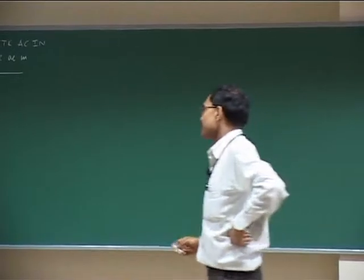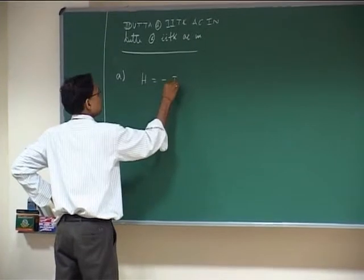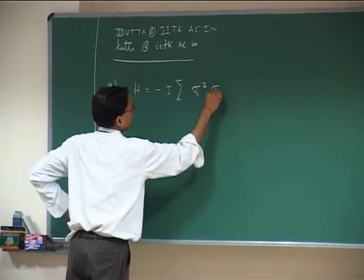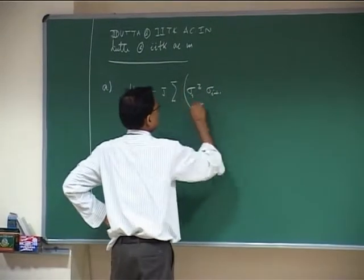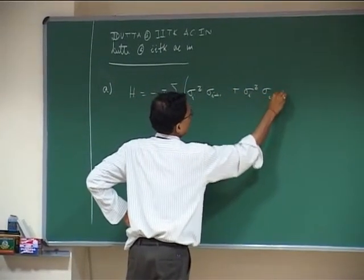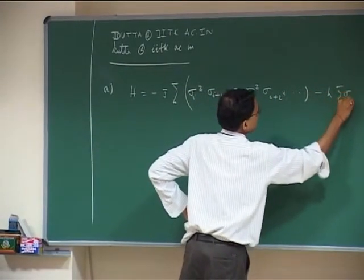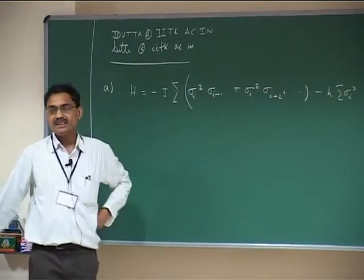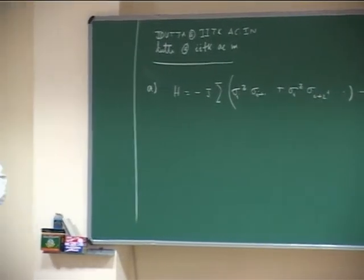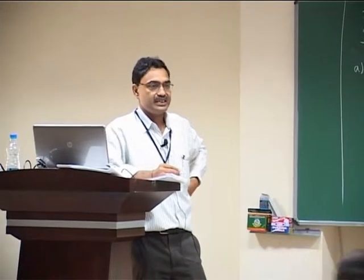Why not take a transverse Ising model which has interactions like σ_i σ_{i+1}, then make it more complicated with σ_i σ_{i+2} and so on, and then give your field. How do the Kibble-Zurek results get altered when you introduce further neighbor interactions?